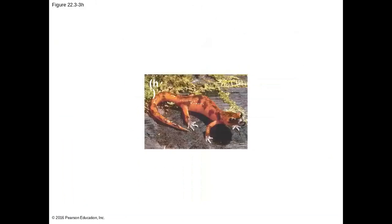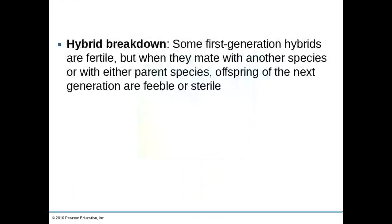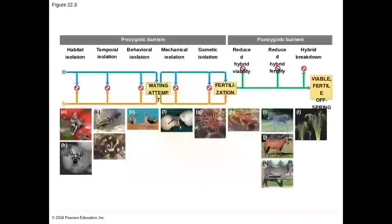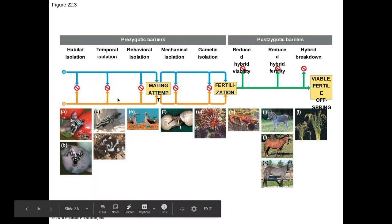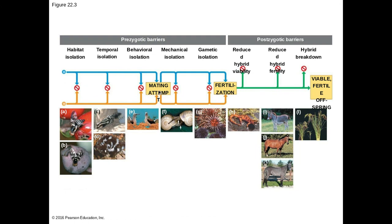Finally, we have hybrid breakdown. This is when some first-generation hybrids are fertile, but when they try to mate with another species or either of the parent species, the offspring of the next generation are either not living to reproductive age or are sterile. So those are all the different types of barriers. The first three prezygotic barriers prevent a mating attempt from happening, while mechanical and gametic isolation prevent fertilization. If we do get a fertilized egg, postzygotic barriers may still prevent viable fertile offspring.